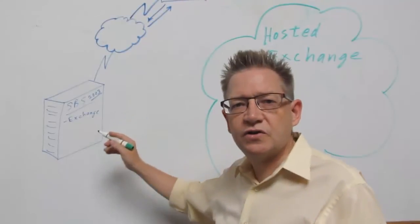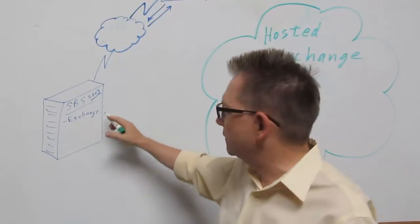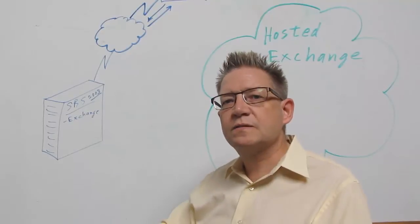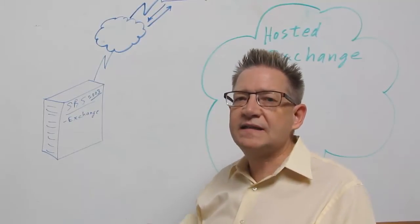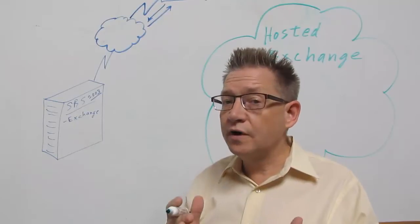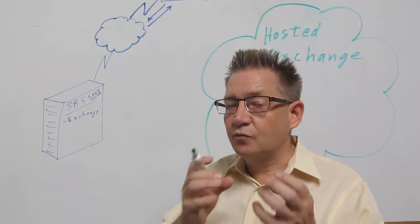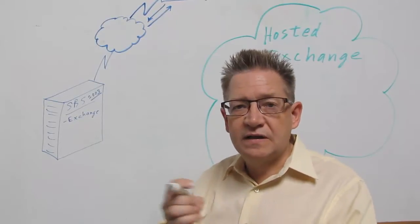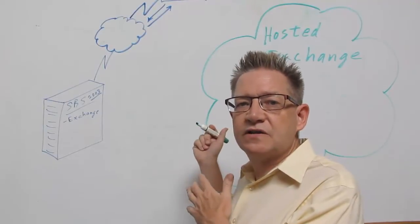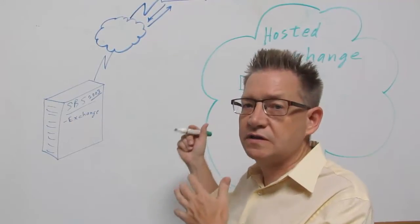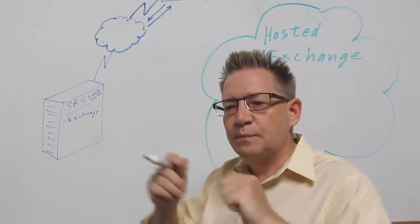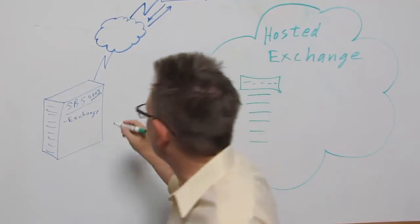Next you go to your Exchange server — let's say you've got SBS 2003. You're going to use XMerge to spit out PSTs of all of the Exchange mailboxes. Don't worry about the fact that right now there's going to be some stuff you miss. We're going to basically populate as much as we can in the new system. So all you have to do right now is go and spit out those PSTs using XMerge.